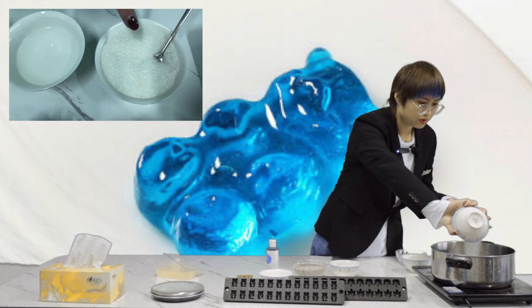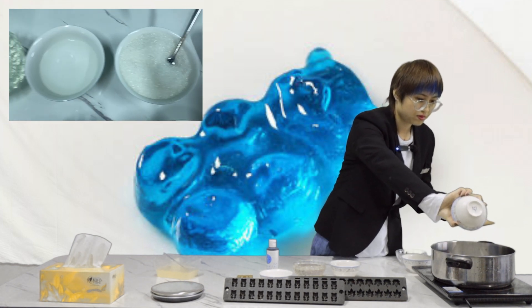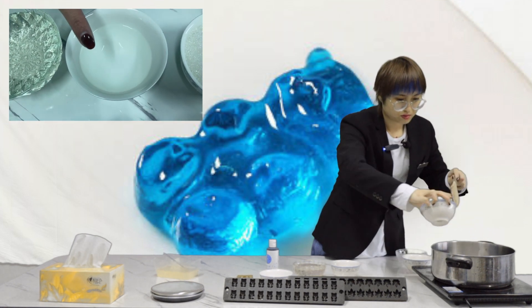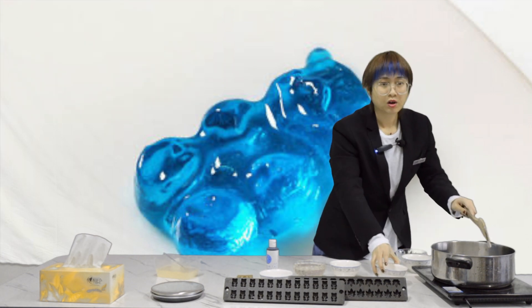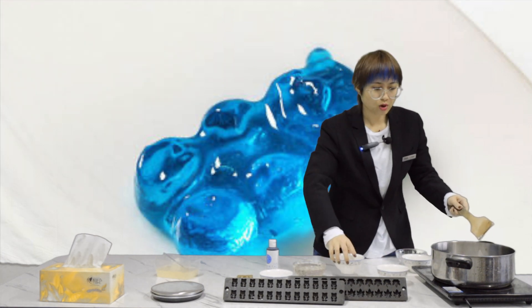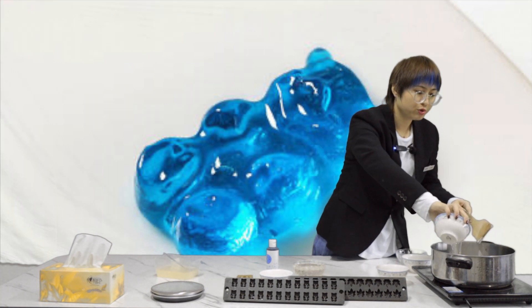Step 2, we put the sugar, water, and syrup into the cooker. Then, we start cooking until the temperature comes to 180 degrees.